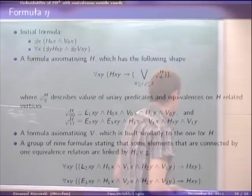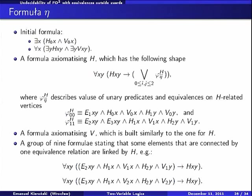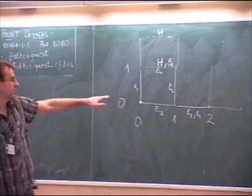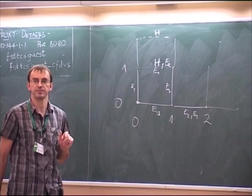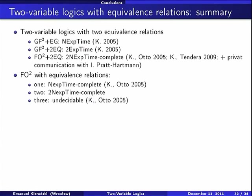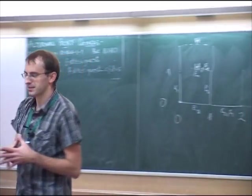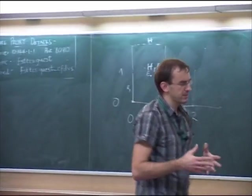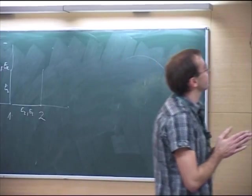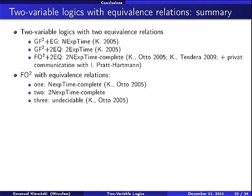So this is just a sketch of the proof, of course, but this is the main idea. We use, in this argument, we use only transitivity of this relation EI, in fact. Okay, so now I would like to go to conclusion. These were all the results I wanted to present. Some in detail, some in sketches. Let me just summarize some results and tell you about some related results.